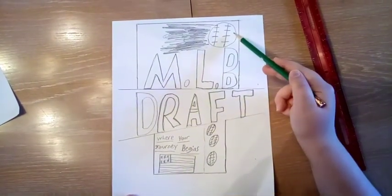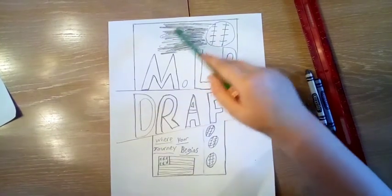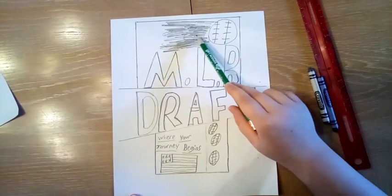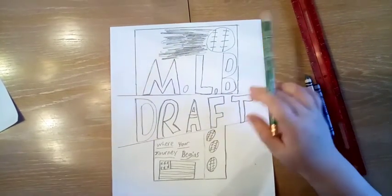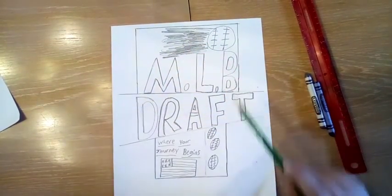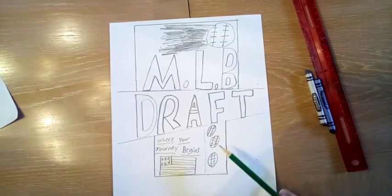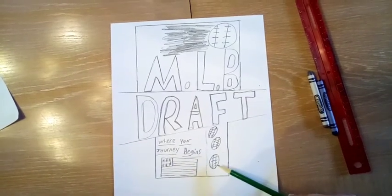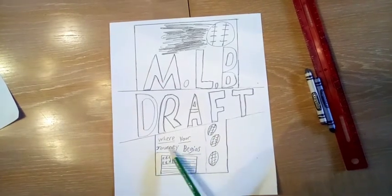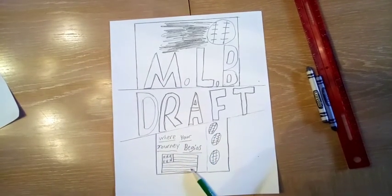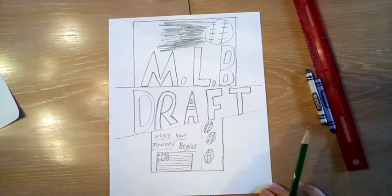I put a baseball up here and some little ziggy lines back here. You're going to want to make those darker if you can, and that's kind of like a baseball with little flames behind it making it look fast. Down here on the smaller side of this square I put three baseballs and I put where your journey begins with the U.S. flag. For your final step you're going to color in.